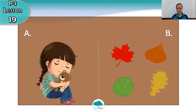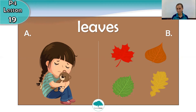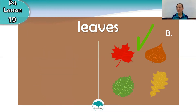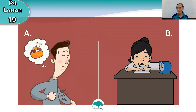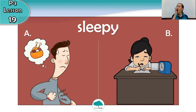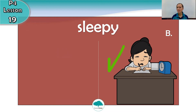Our next picture is A and B. Which one is leaf? In picture B you see leaves — four leaves. Our next picture is A and B. Which one is sleepy? Picture B. This lady is tired. She is sleepy.